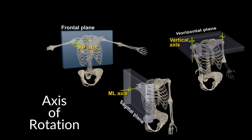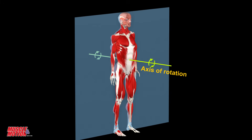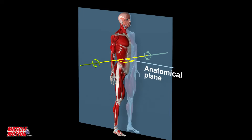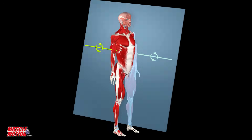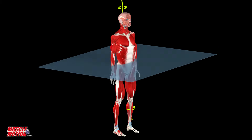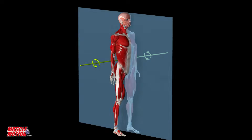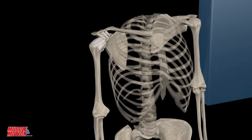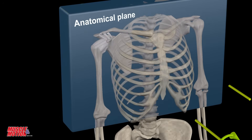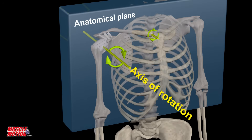Axis of Rotation. Bones rotate around a joint in a plane that is perpendicular to an axis of rotation. The axis of rotation is an imaginary line that projects through the pivot or rotation point in a joint.